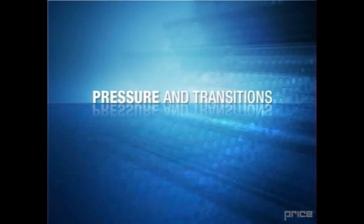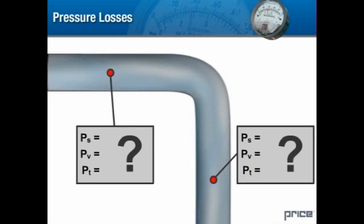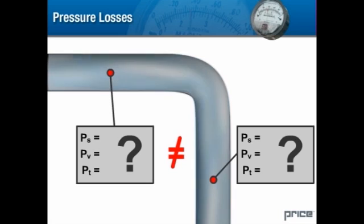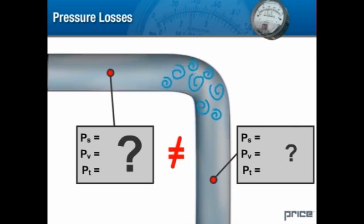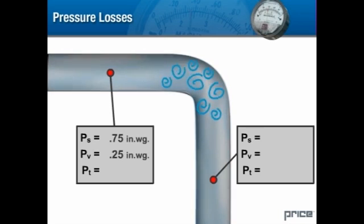Pressure and transitions. What happens to the air stream as it passes through transitions in a duct? One might expect that if we measure the pressure upstream and downstream of an elbow, the static, velocity, and total pressure would be about the same on either side. However, this would only occur if we could construct perfectly frictionless ductwork and transitions. In the real world, all ductwork and transitions present some degree of friction and obstruction. Whenever the air flow is required to change direction, turbulence is produced and there is a loss in total pressure. We see that the upstream static pressure is 0.75 inches of water and the velocity pressure is 0.25 inches of water for a total pressure of 1 inch of water.